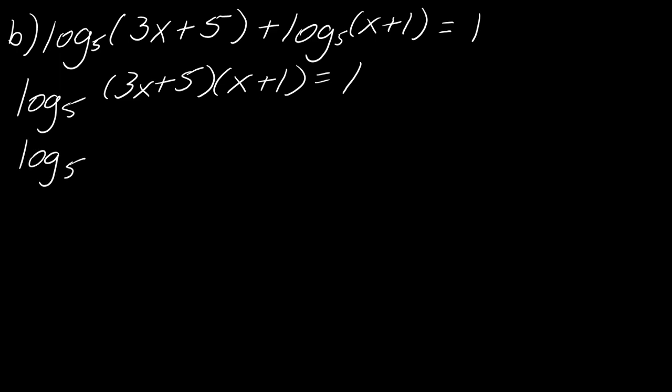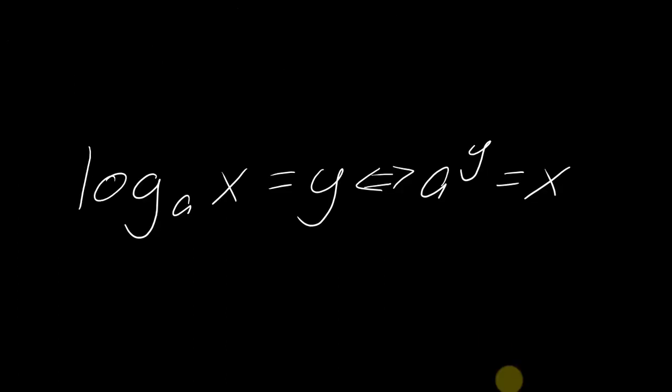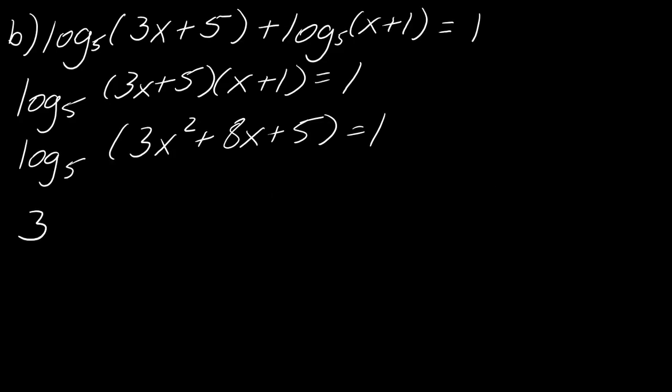And then I'm actually just going to go ahead and foil all that stuff out. So this will be log base 5 of 3x squared plus 8x plus 5. So now I've taken this as far as I possibly can. And I'm going to go ahead and use this definition of the logarithm again. And so this will become 3x squared plus 8x plus 5 equals 5 to the first, which equals 5. But so now we have a quadratic. So best practice with quadratic is to have the quadratic equal to 0. So I can go ahead and subtract the 5 off so that I'm left with 3x squared plus 8x equals 0.